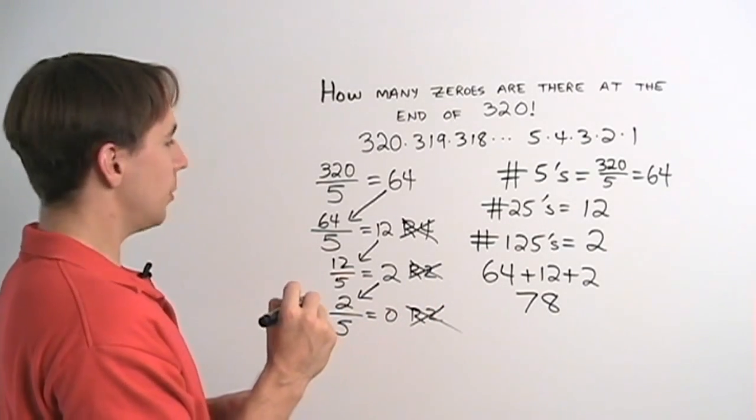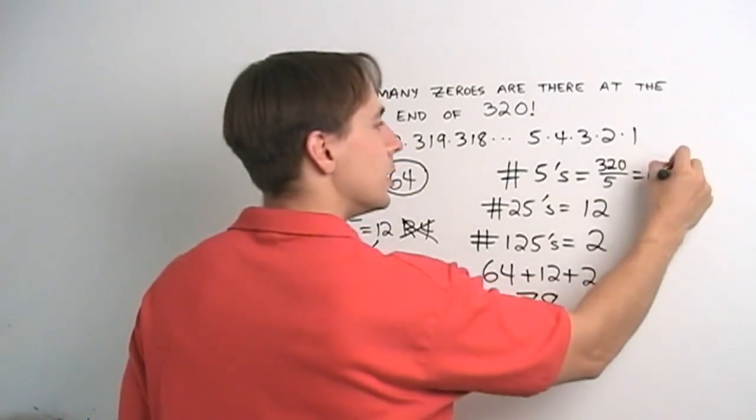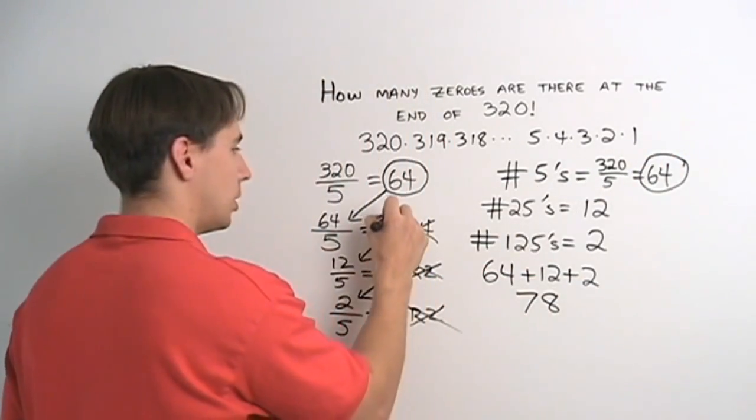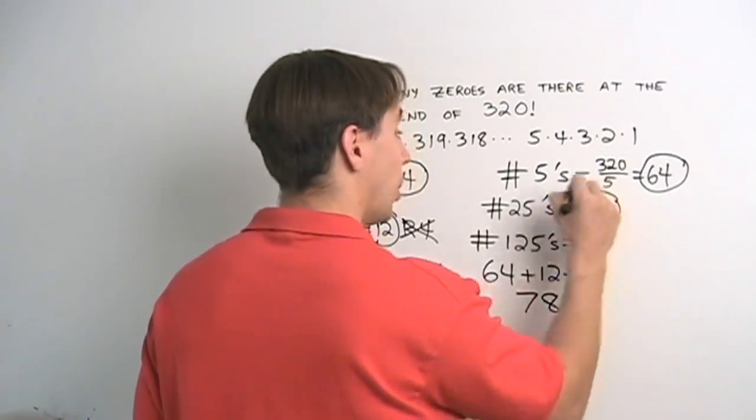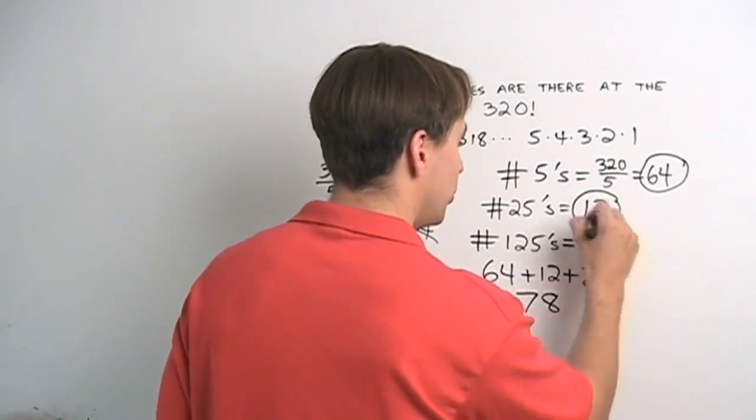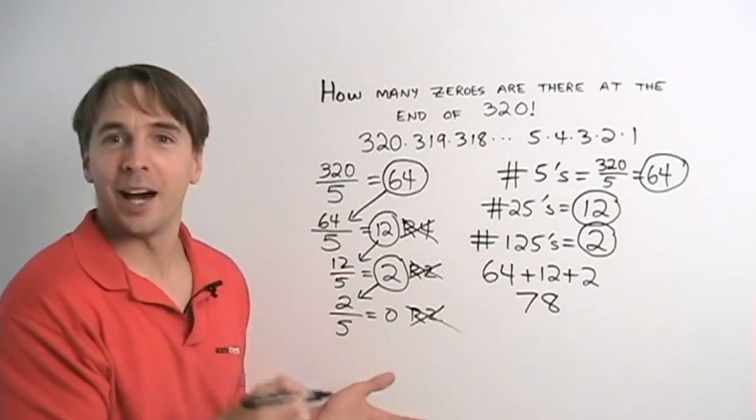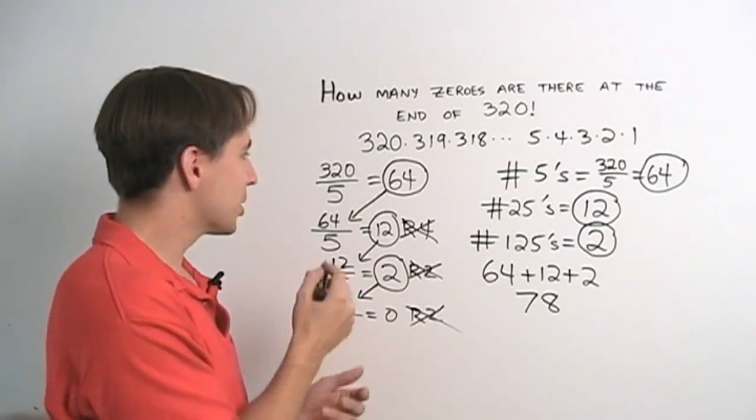Oh, look at those numbers. 64, 64, 12, 12, 2, 2. Is it a coincidence? Well, probably not. I wouldn't show it to you if it were just a coincidence.